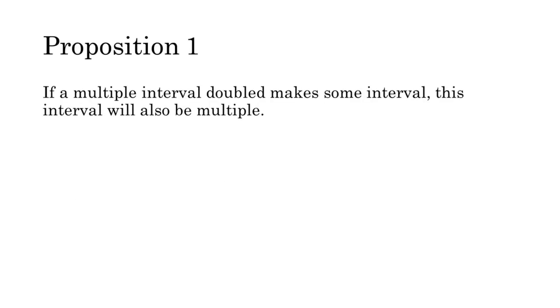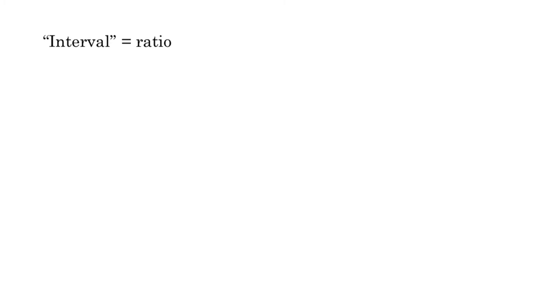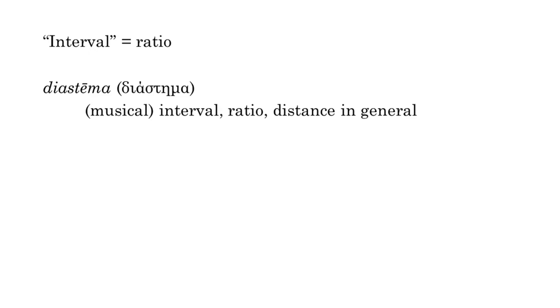If a multiple interval, doubled, makes some interval, this interval will also be multiple. The first nine propositions of the Division are purely mathematical in nature. They are relevant to music, but they don't deal with musical objects. When the author uses the word interval, what he means is ratio. The word in Greek is diastema, which can mean ratio, musical interval, or distance more broadly. When music is treated as a branch of arithmetic dealing with relative quantity, the distinction between using diastema to mean ratio and using it to mean musical interval becomes so fine as to disappear entirely.